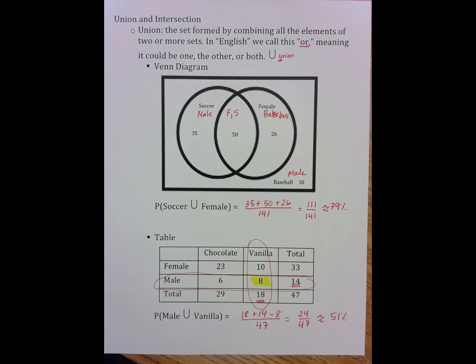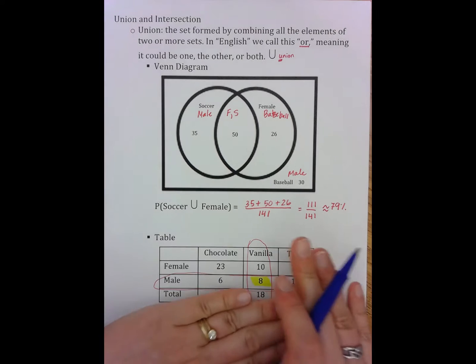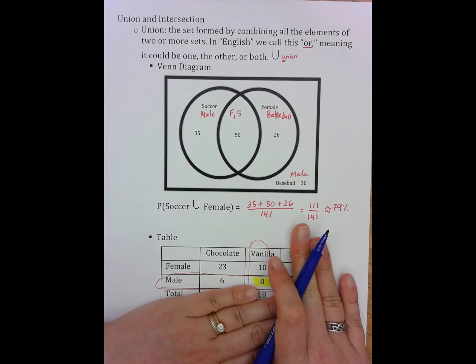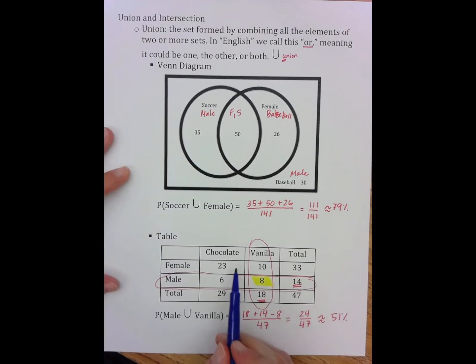Now there's a second way to do this. And the second way is very similar to what we did in the Venn diagram, which is to go to each of the inside boxes. That's what the Venn diagram shows is all of these numbers. And to say, vanilla, male. Vanilla, male? No.